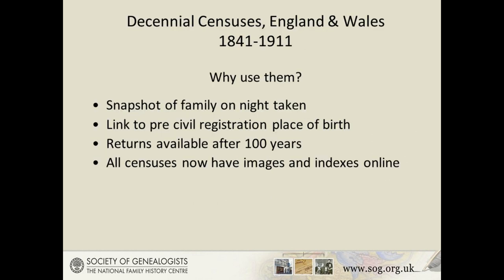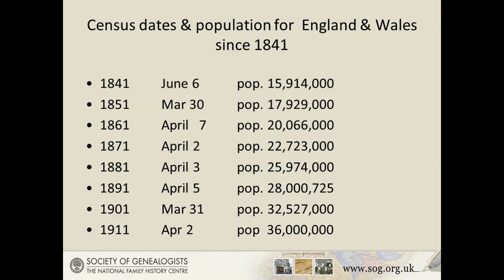The 19th-century census returns are key documents in identifying and learning more about our ancestors. They not only provide evidence to help prove lines of descent, but also place individuals in the more meaningful context of their families, neighbours, and local and social surroundings. At the very least, they provide a snapshot of the family living together on the night of the census, showing ages, relationships within a family, and vital information about places of birth. The national censuses were conducted primarily because of the government's need for information about population growth and distribution in the late 18th century — they were not intended to provide material for future family historians. The census was instituted in 1801 and taken every ten years thereafter.